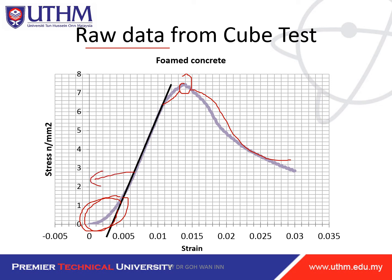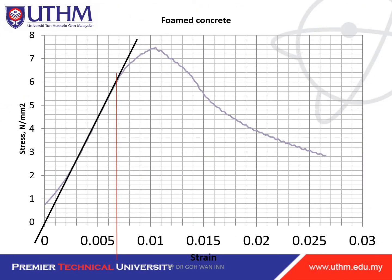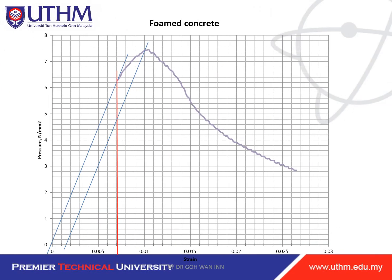From the raw data you cannot directly use it for concrete damage plasticity calculations. First, remove the initial error portion by shifting the data so it starts correctly. You draw a line for the actual elastic behavior — the initial portion is error, so remove it. You can then see that this is the elastic region, and from a certain point it starts into the inelastic region.